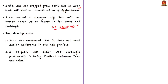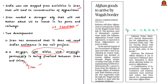Over time, Iran needed a stronger ally to counter American sanctions. Two important developments followed: Iran announced that it does not need Indian assistance in the railway project, and a 25-year strategic partnership involving about 400 billion US dollars is being finalized between Iran and China. This puts India in a strategically disadvantaged position — in the future, India may even have to depend on Pakistan to get goods from Afghanistan. A news article in today's newspaper states that Pakistan will allow goods from Afghanistan to India as part of an agreement with Afghanistan, set to take effect the following day.